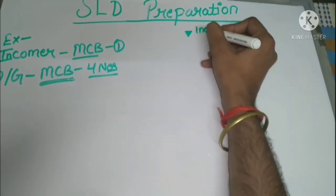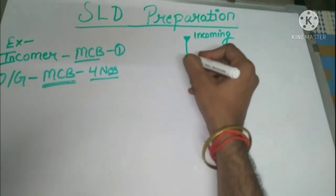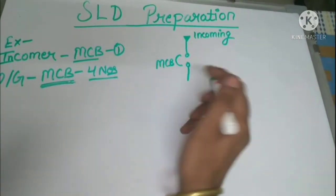This is incoming line, which may come from the main power supply. This is MCB. This one. This is incoming MCB.